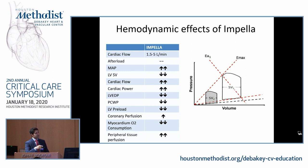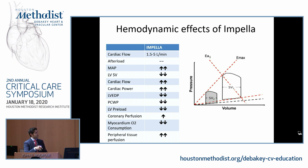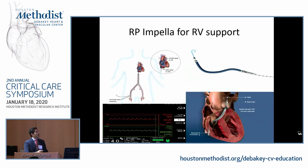What does the Impella do? It moves the pressure-volume loop all the way to the left, significantly decreasing the heart's workload. It can provide 1.5 to 5 liters per minute depending on device type and speed. It does not greatly affect afterload, but significantly increases mean arterial pressure, cardiac flow, and cardiac power, and decreases left ventricular end-diastolic pressure, wedge pressure, and left ventricular preload. It increases coronary perfusion and significantly decreases myocardial oxygen consumption, making it very effective for offloading the left ventricle while increasing peripheral organ perfusion.